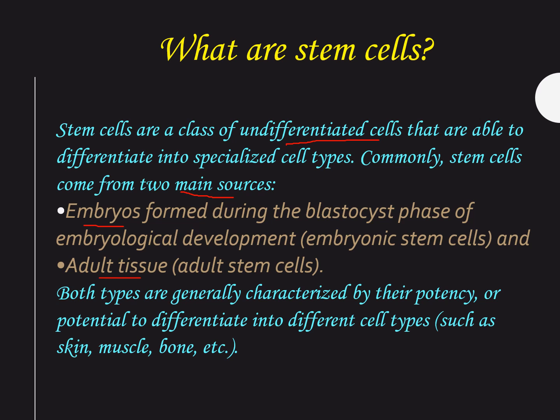When I say embryos, they are derived from the blastocyst phase of embryological development — we generally call them embryonic stem cells. Adult tissue is what describes adult stem cells. Both types of cells are generally characterized by their potency, which is the ability or potential to differentiate into different cell types such as skin, muscle, bone, etc.